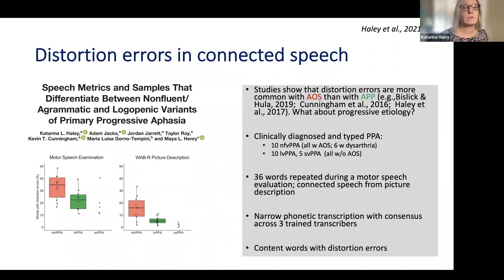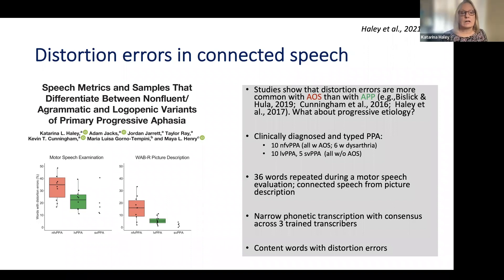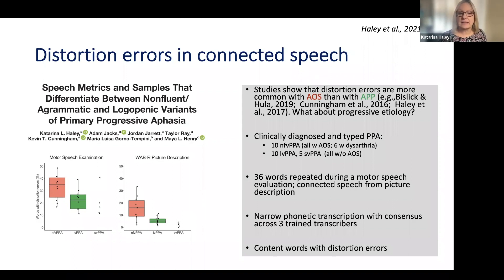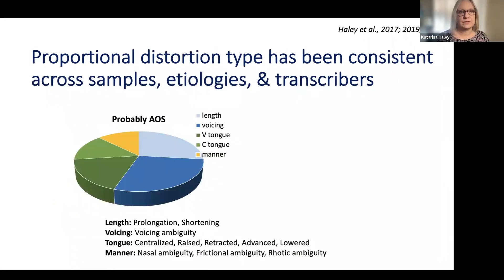Expressing distortion errors by word to compare samples more easily, we found statistically more distortion errors in the non-fluent PPA group who had apraxia of speech than in the other two groups. There was overlap in the motor speech evaluation sample, but interestingly that overlap diminishes when we get to connected speech — the distinction is much clearer in connected speech. There are fewer errors in connected speech, but there's a clear difference between the groups. We also found that these differences in samples were not only for distortion errors but also for prosodic errors.